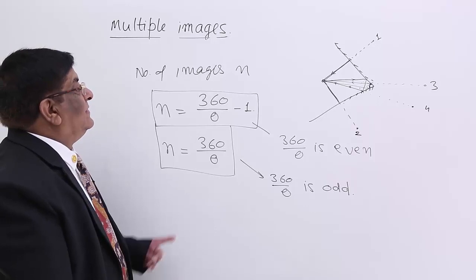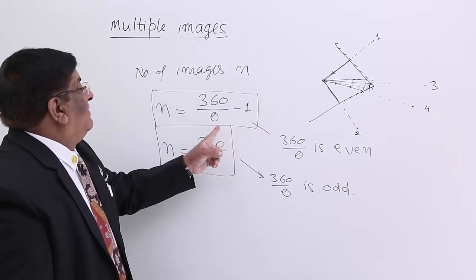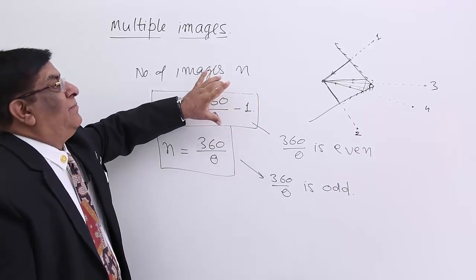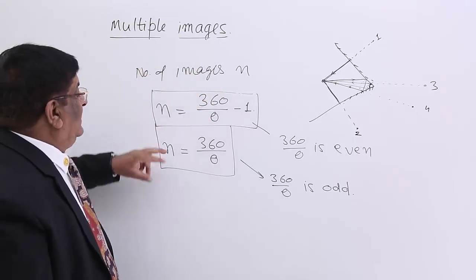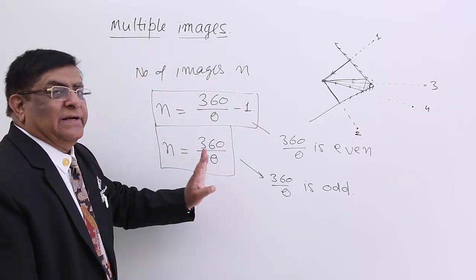That means if 360/θ comes to even, then that will not be the number. You have to decrease it by 1 so that it becomes an odd number. Similarly, if n is already odd, then this is the answer.